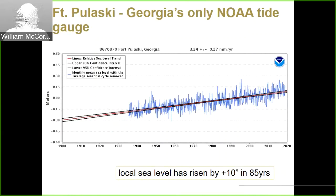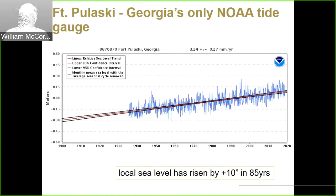The Fort Pulaski data set has gone up 10 inches in about 85 years, very similar to the global average. There's a lot of uncertainty going forward in how to treat sea level rise. This graphic illustrates uncertainty arising from climate projections and their impact on global sea level rise over the next 80 years, drawing on long-term tide gauge information going back to 1800 and projecting forward to 2100. This axis is in meters now.